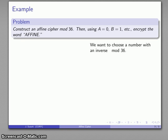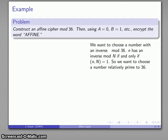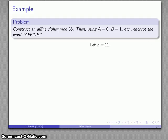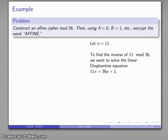So we want to choose a number with an inverse mod 36, which means we need to find something that is relatively prime to 36. So what can I do? Well, let's try N equals 11. And just to make sure, let's go ahead and find that inverse mod 36.